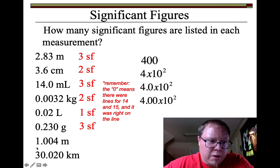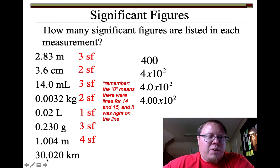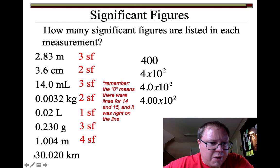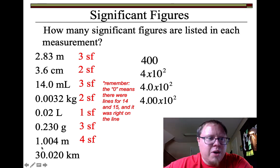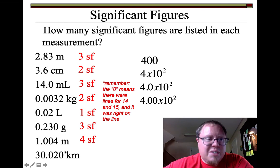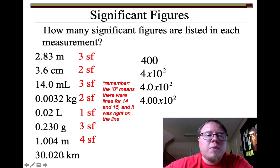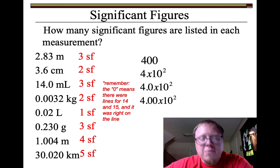1.004 — the one counts and the four counts, and everything in between is going to count. So that one's got four significant figures. 30.02 kilometers — the 3 counts and the 2 counts, so everything in between counts: tens place, ones place, tenths place, hundredths place. And that zero on the end — we wrote it to indicate we had a 0.02 and maybe a 0.03 line, thinking it's right on 0.02. So we could get a thousandths place with this device. That's got five significant figures.